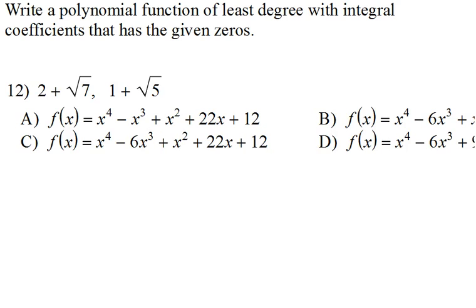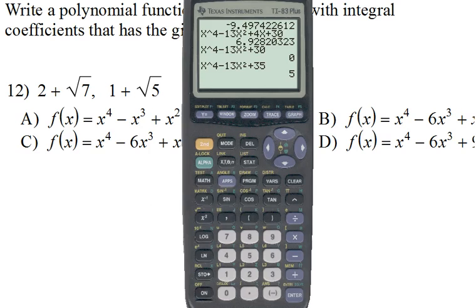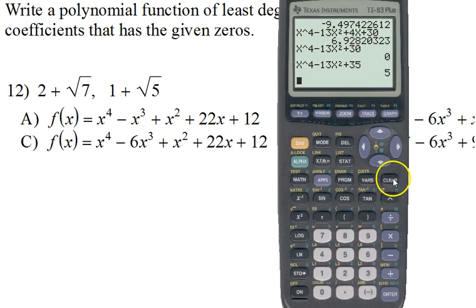We'll do another one, number 12. These are even bigger. 2 plus the square root of 7 and 1 plus the square root of 5. They're conjugate pairs. It's a weird word, but all it means is you keep it the same, you just change the sign in front of the square root. So 2 minus the square root of 7 is also a zero, and 1 minus the square root of 5 is also a zero. So we do have 4 here as well, so it is fourth degree.